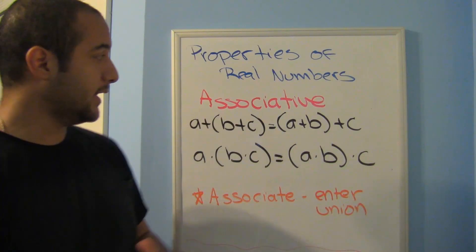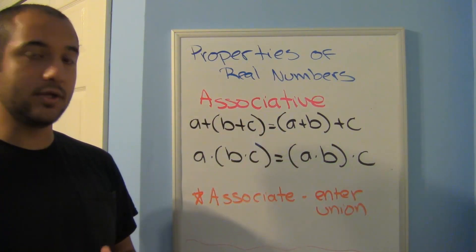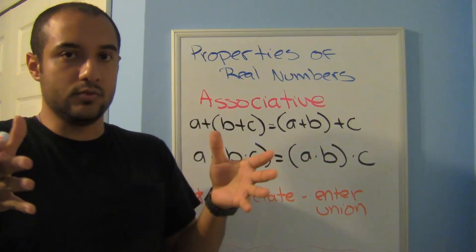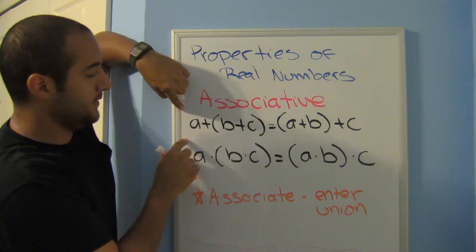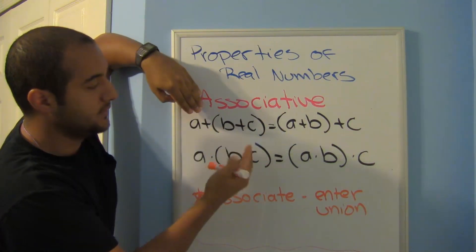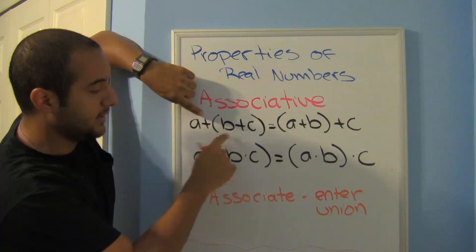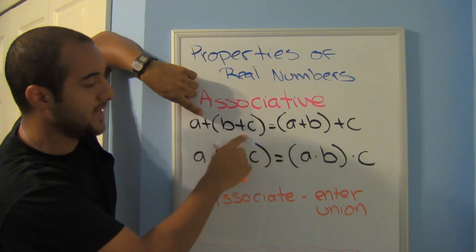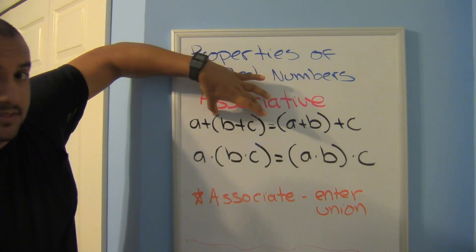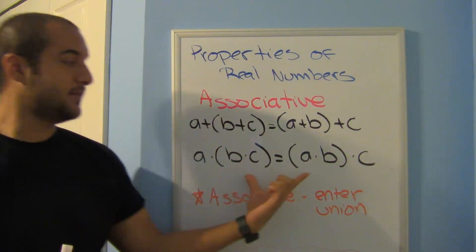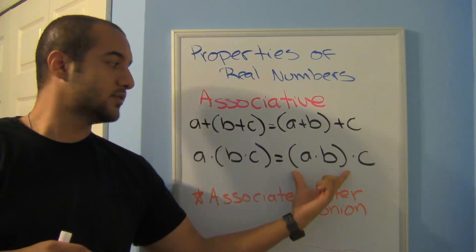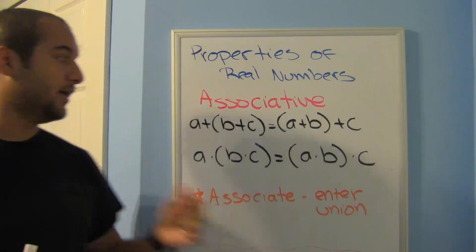The associative property of adding and multiplying uses the keyword 'associate,' meaning who you group yourself with. Here, a is by itself and b and c are associates in parentheses. Since everything is adding, this equals a grouping where a and b are associates instead. So at first b and c are associates; then a and b become associates. The same applies for multiplication.